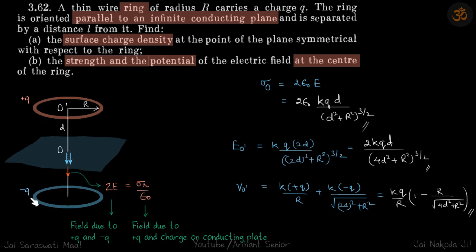And sigma_r by epsilon_0 is field due to plus q charge on the conducting plate, induced charge on the conducting plate. So from here, actually this should be sigma_o.